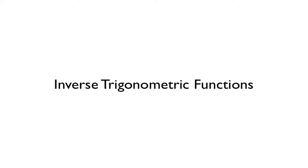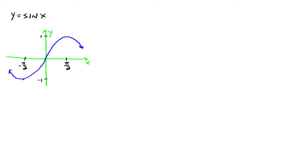This video is on the inverse trig functions for sine, cosine, and tangent. To begin, let's remember what the graph of sine x looks like. The graph of sine x is not a one-to-one function — it does not pass the horizontal line test. We can't talk about an inverse function unless we have a one-to-one function.